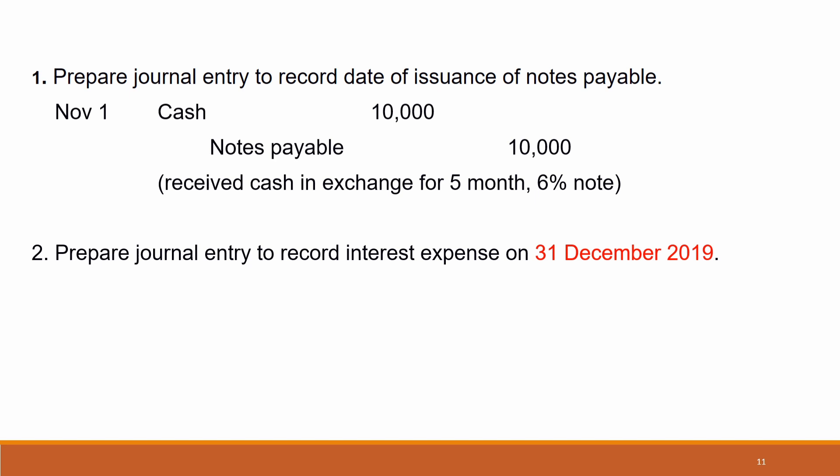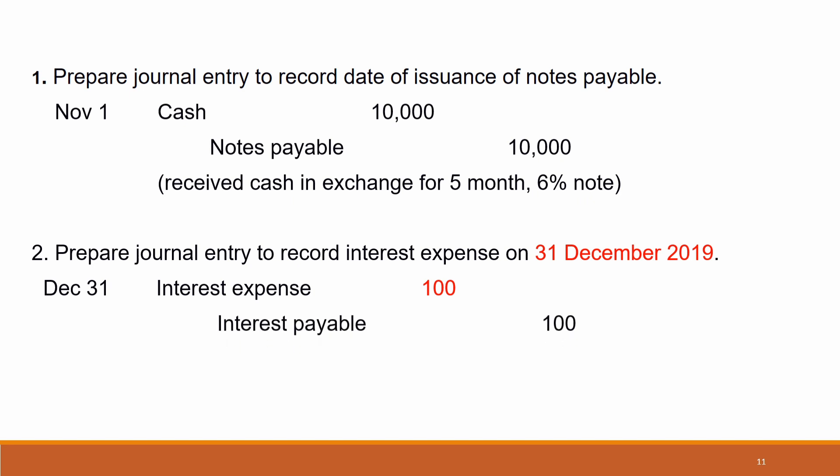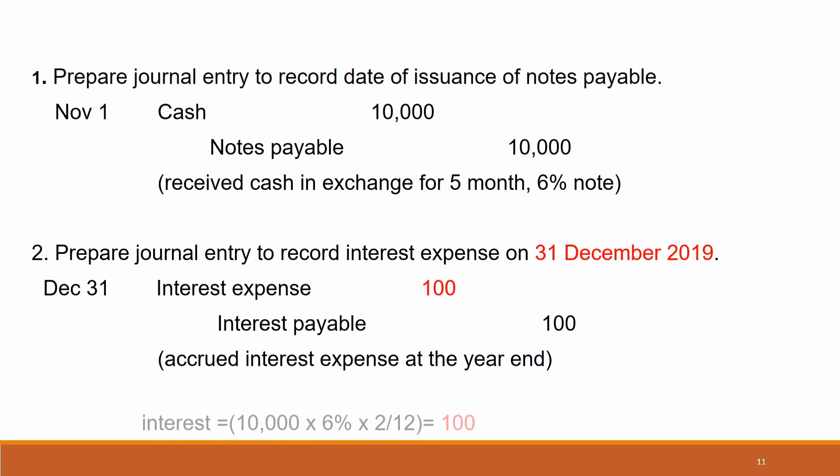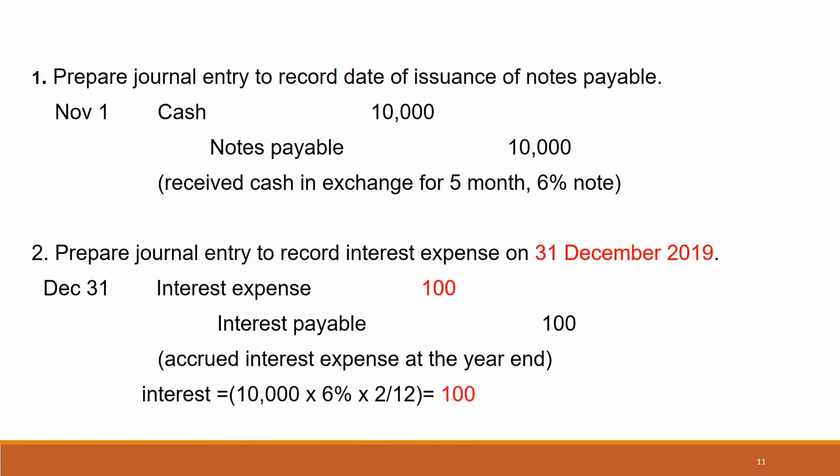Journal entry number two: record interest expense on 31st December 2019. We make an adjustment to accrue interest expense. Debit Interest Expense, Credit Interest Payable. The calculation is RM10,000 × 6% × (2 ÷ 12) = RM100, covering November and December.